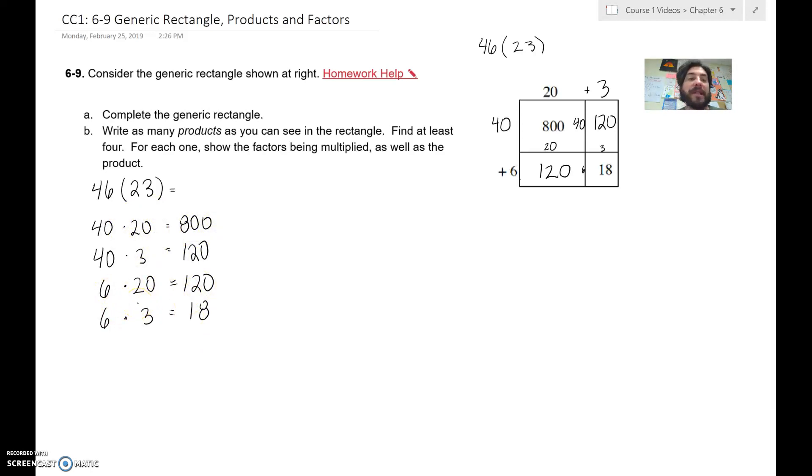And then all together, if we were to add all these together, what would we get? And that would be the product of what 46 times 23 is. So 800 plus 120 plus 120 plus 18. 8 plus all those zeros is just 8, 2 plus 2 plus 1 is 5, and 8 plus 1 is 2 is 8, 9, 10. So 1,000, 1,058. There you go.